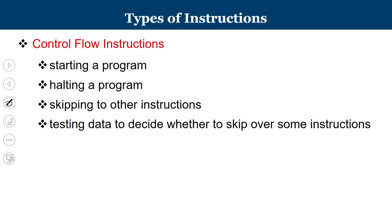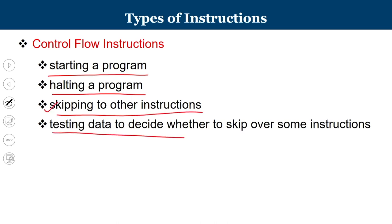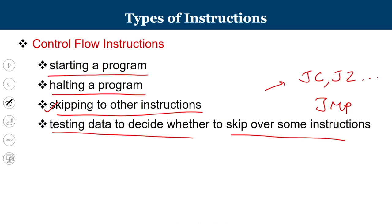The third category is control flow instructions. Whenever you need to perform certain checking, and upon the outcome either instruction A or instruction B has to be executed, this alters the flow of execution. They belong to control flow. Specific instructions initiate the program, halt it, or skip to other instructions. Testing data to decide whether to skip over some instructions — jump instructions — can be based upon carry flag, zero flag, or some type of flag. This conditional checking all belongs to control flow instructions.